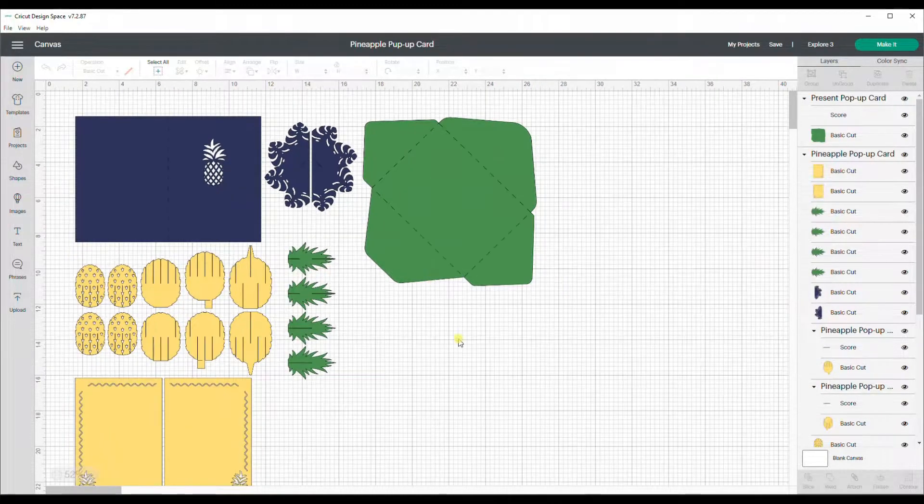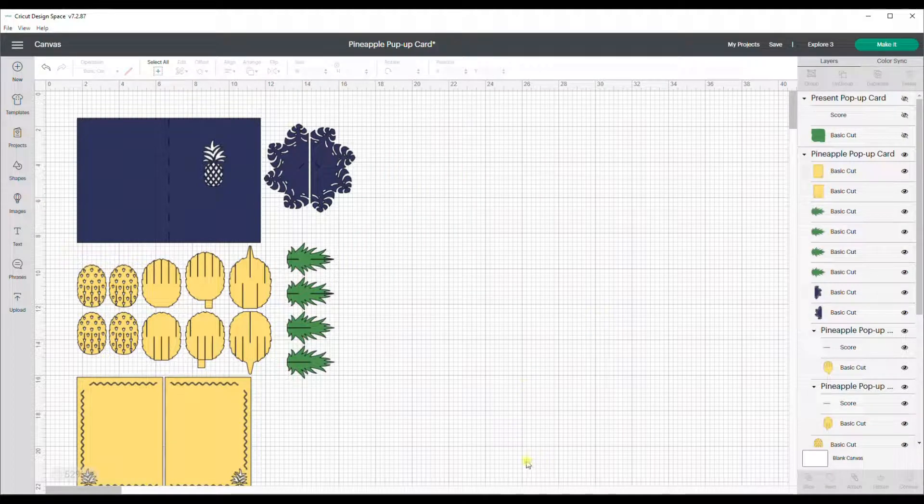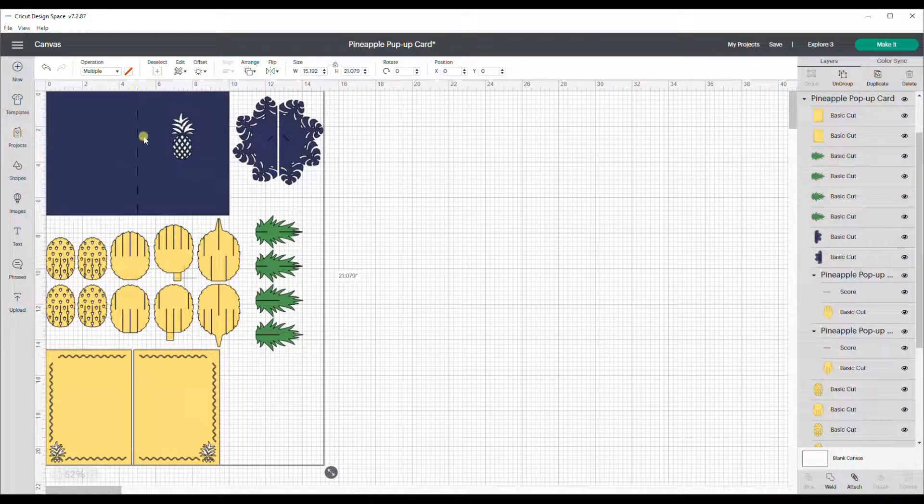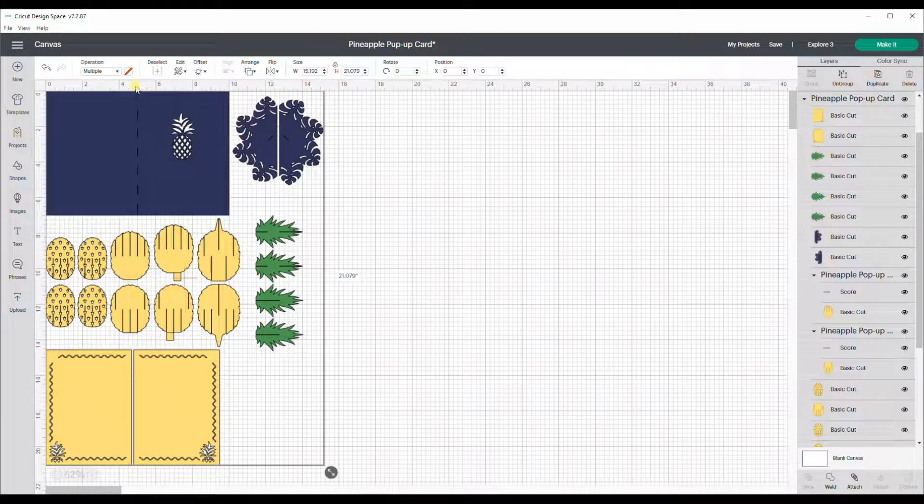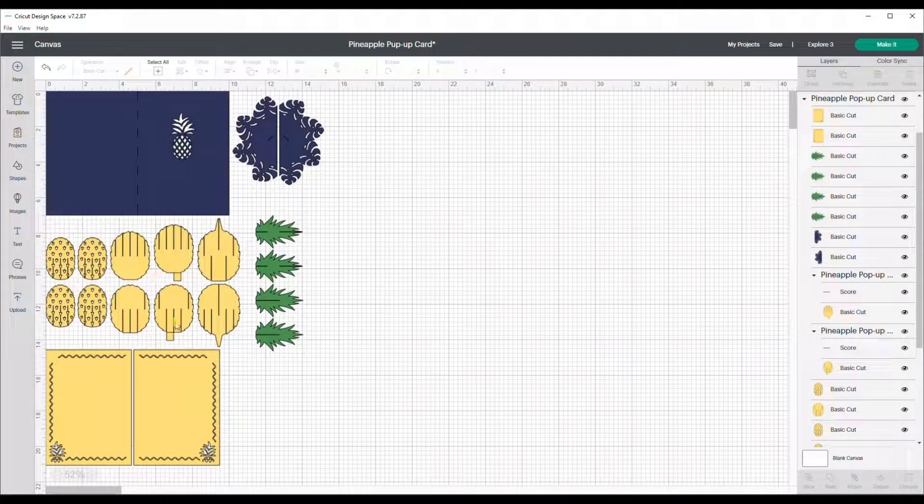I clicked customize to show it on my canvas and I am going to hide this because I don't need the envelope today. To double check the measurements, you can select all the pieces and align the base card with the top. In here I see that it is 5x7 which is exactly what I need today.